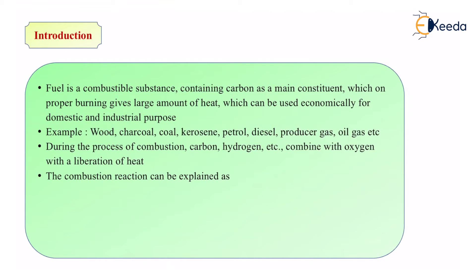The combustion reaction can be explained as follows. Carbon plus oxygen forms CO — that is, carbon monoxide — plus 94 kilocalories. That means when one atom of carbon combines with one atom of oxygen, it forms one molecule of carbon monoxide and liberates 94 kcals. Another example: two hydrogen atoms plus one oxygen atom form H₂O, which is water, and liberate 68.5 kilocalories.